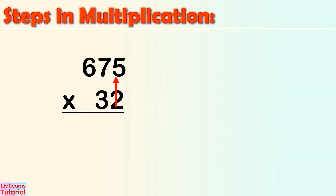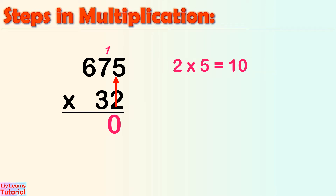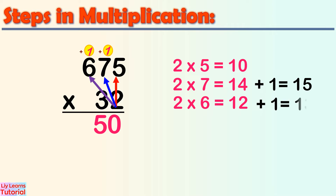2 times 5 equals 10. Write 0 below the line, then carry over 1. 2 times 7 equals 14, plus 1 equals 15. Write 5 down and carry over 1. 2 times 6 equals 12, plus 1 equals 13. Write 13 alongside the first partial product.